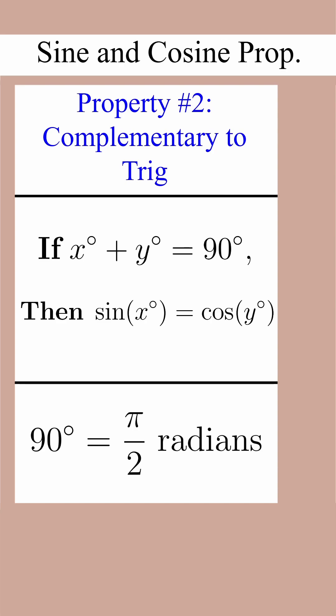And property number 2 tells us that if two angles add to 90, the sine of one is equal to the cosine of the other.